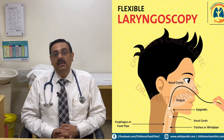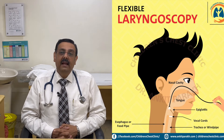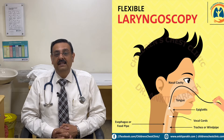We gently advance the flexible laryngoscope through the nose, looking at the nose, the nasal turbinates, and the opening of the sinuses. Once we reach the back of the nose, we evaluate the size of the adenoids, and as we gradually progress the laryngoscope through the back of the throat, we evaluate the size of the tonsils and presence of any cystic areas.